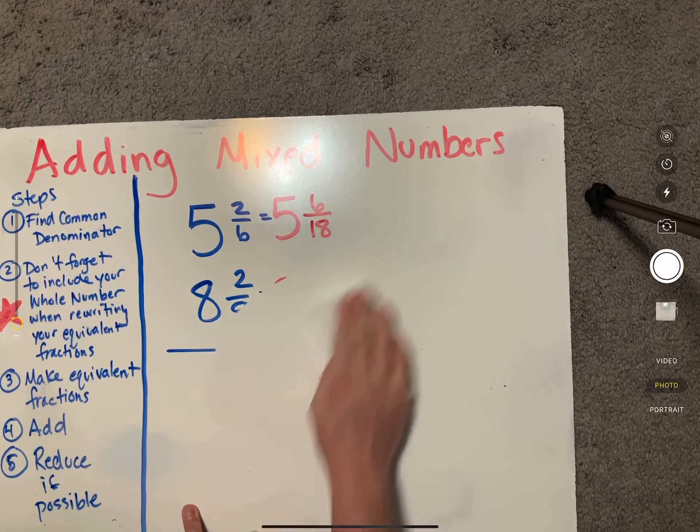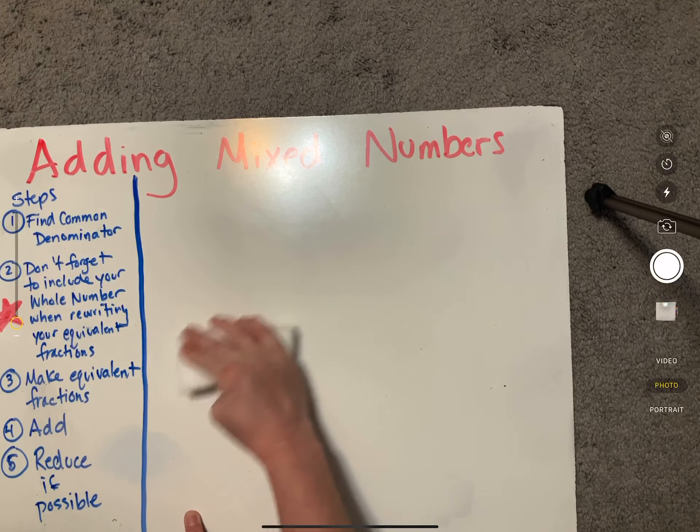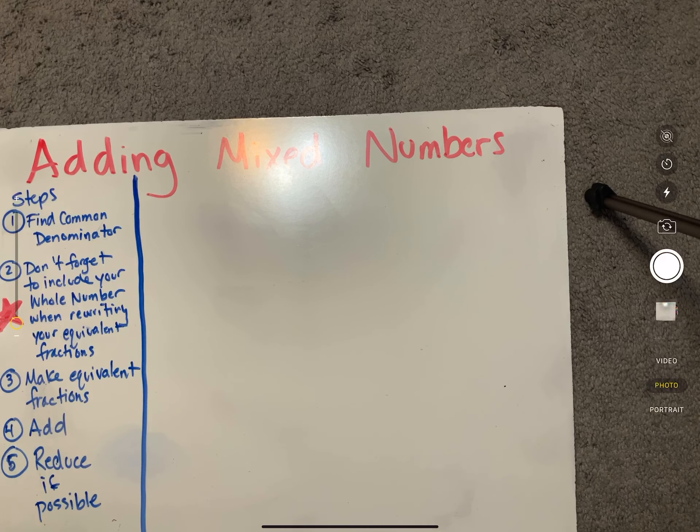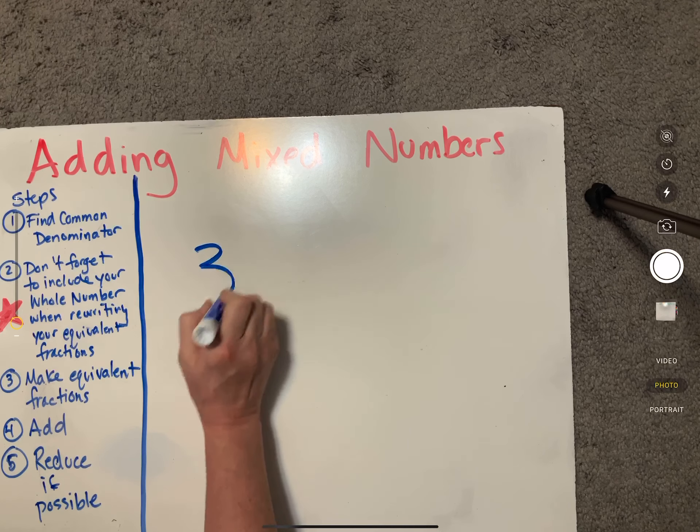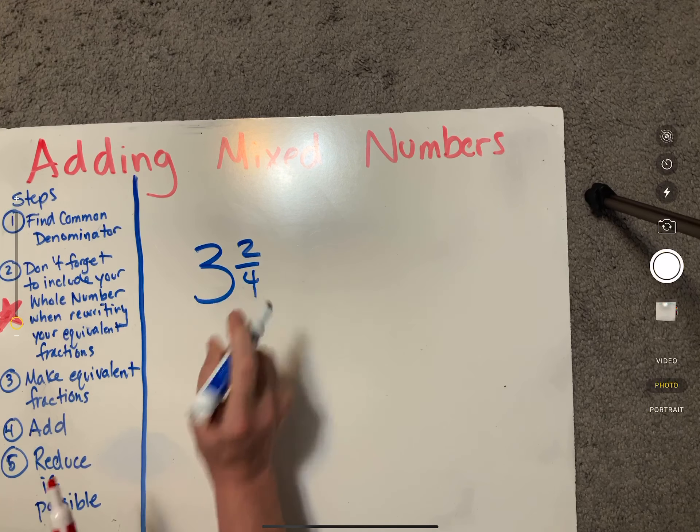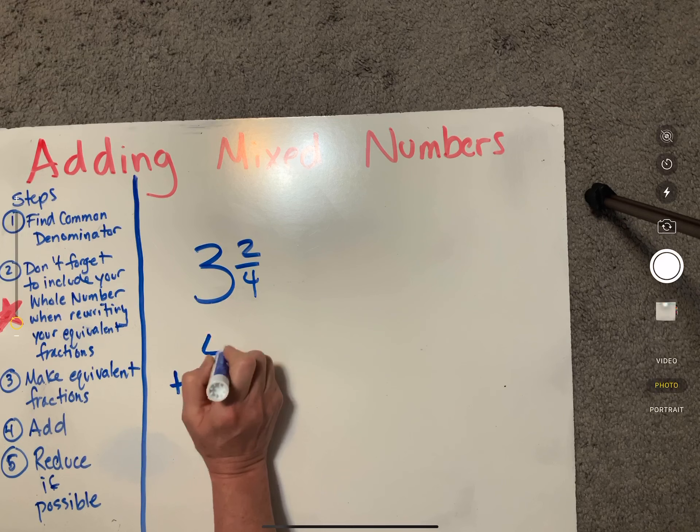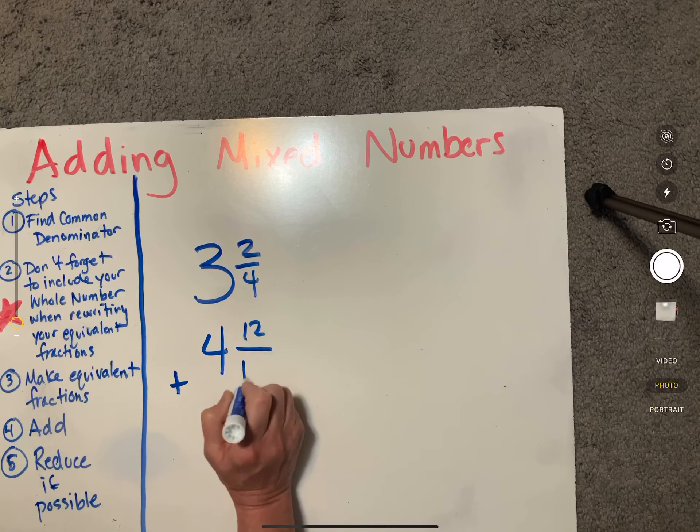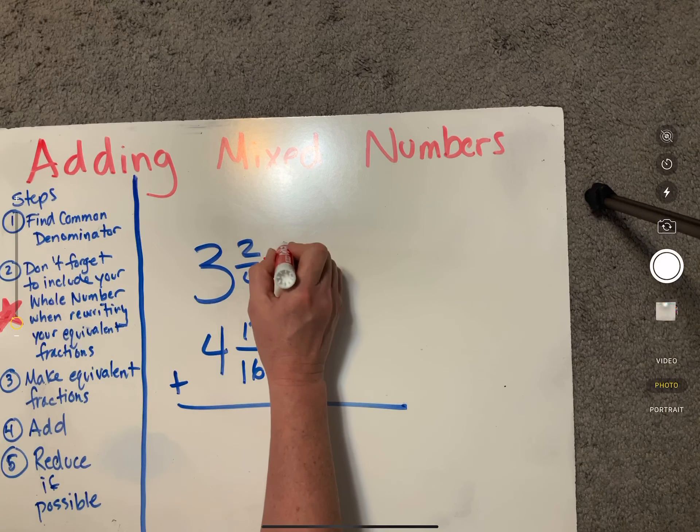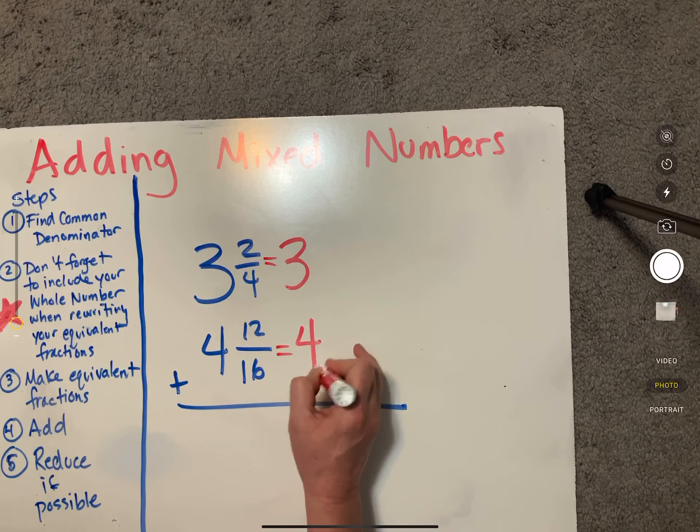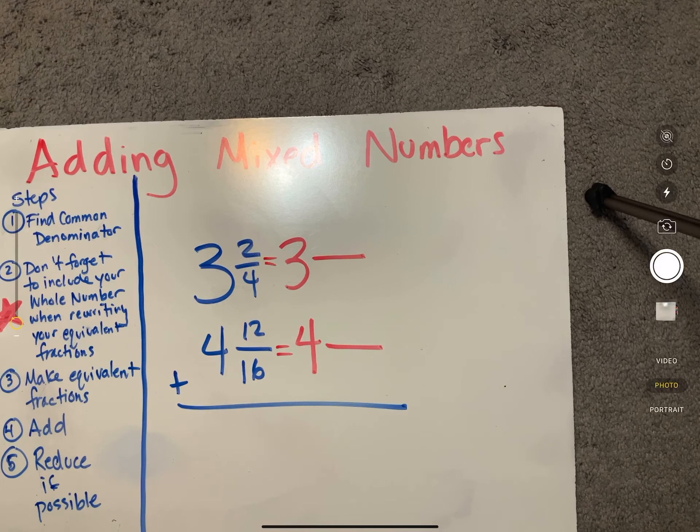Let's do another one. Let's try three and two fourths plus four and twelve sixteenths. So we need our equivalent fractions. Again, we're going to put our whole numbers over here. You've got to put your whole numbers over there to travel with your equivalent fractions.